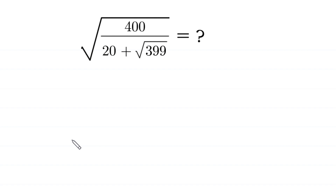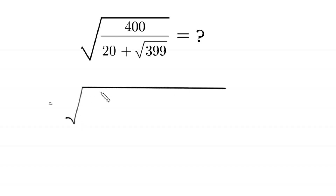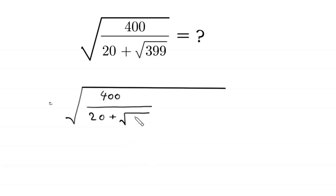Hello everyone, you are welcome to how to solve this very nice square root math simplification problem. We are given the square root of 400 divided by 20 plus root 399.